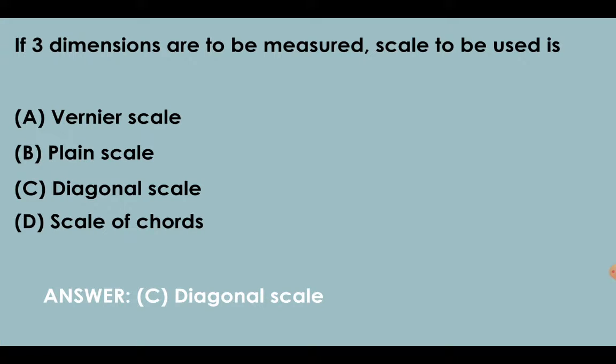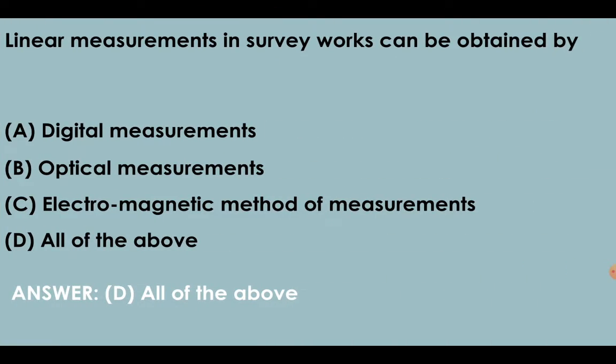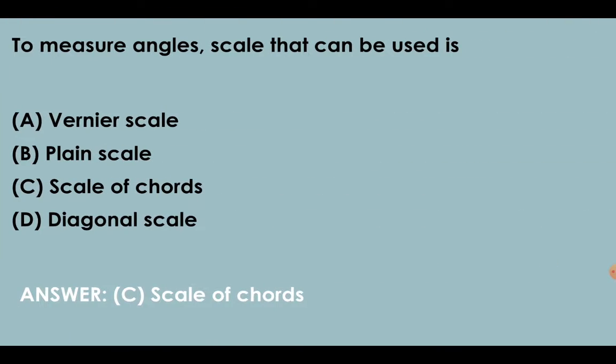If three dimensions are to be measured, we use diagonal scale. Linear measurements can be taken by pacing, perambulator, and chaining - all of the above options are correct. Linear measurement in survey works can be obtained by digital measurement, optical measurement, and electromagnetic method. To measure angle, we use scale of chord.